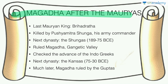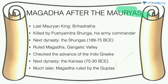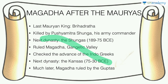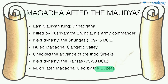The Shunga dynasty ruled Magadha and the Gangetic Valley after the Mauryas and even checked the advance of the Indo-Greeks. After them came the Kanvas, and much later the Magadha area was ruled by the Guptas. These dynasties are not individually very important but are noted because they ruled this historically significant region.